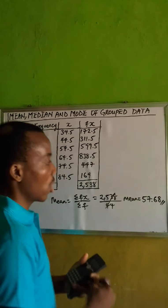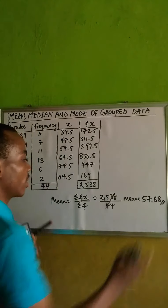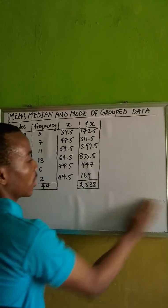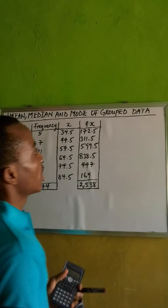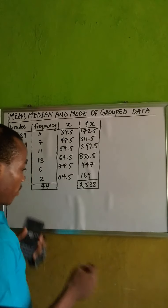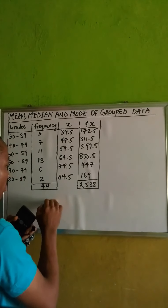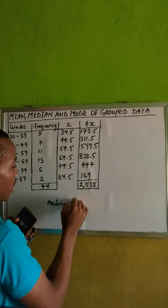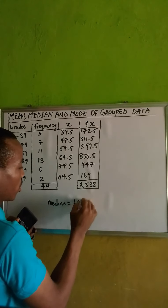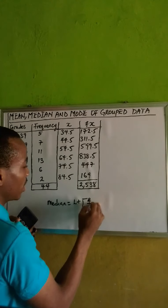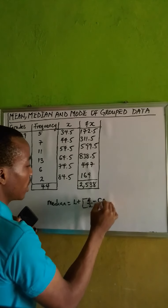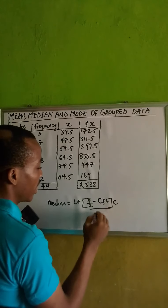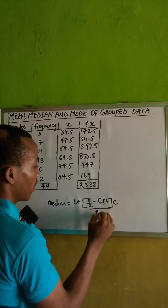That is the mean. We found the mean, so let's proceed with the median. The median of grouped data is given by the formula: lower class of the median class plus, open bracket, frequency divided by 2 minus the cumulative frequency before the median class, multiplied by the class size, divided by the frequency of the median class.